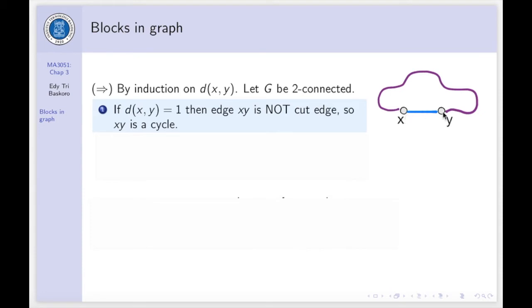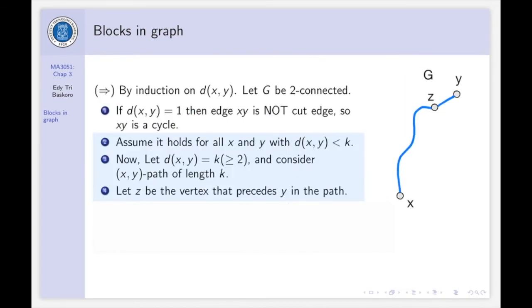The first path is this one, the blue one, and then the second path is this one. Now, assume it holds for all X and Y with distances less than K. Now, consider if the distance between X and Y is K, and consider a path connecting X and Y of length K. For example, this is the path of length K connecting X and Y.